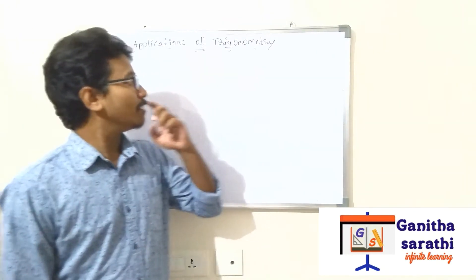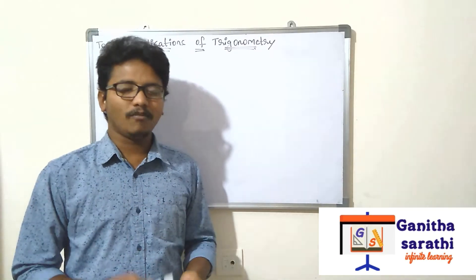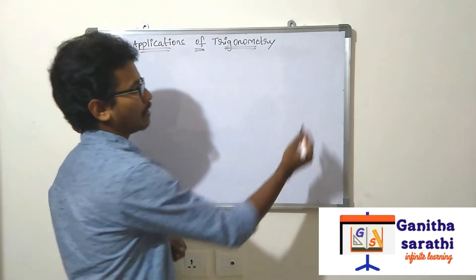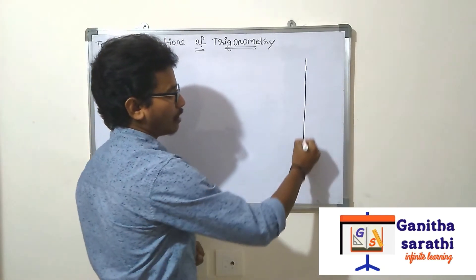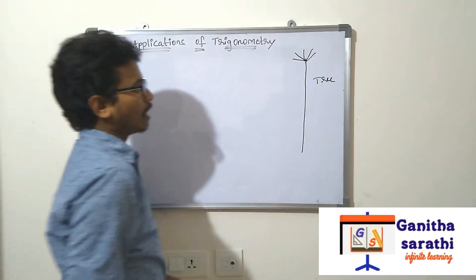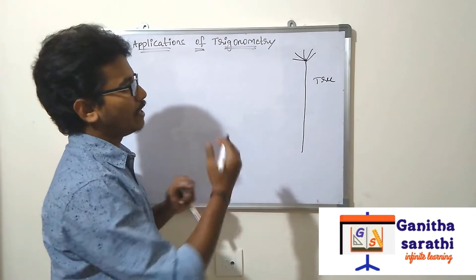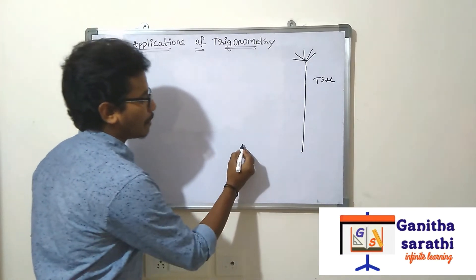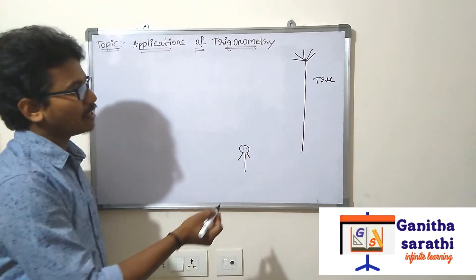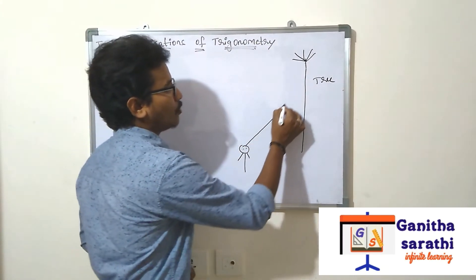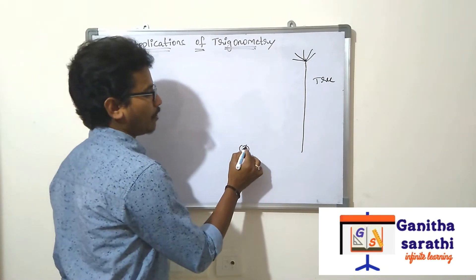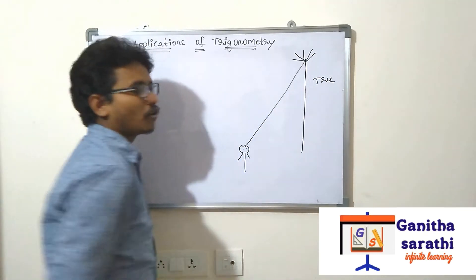First of all, how we will apply trigonometry — in what cases we will apply trigonometry. Take an example: think this is a tree. How we will find the height of the tree? If a person is standing here, the person is looking at the top of the tree.